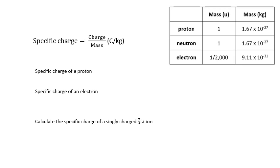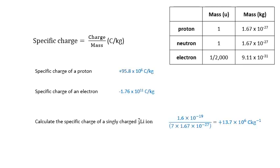Something else we need to know: specific charge. The specific charge is the charge of a particle divided by its mass, measured in coulombs per kilogram. You might need to work out the specific charge of a proton, an electron, or an ion. Have a go at those examples — just divide the charge by the mass.